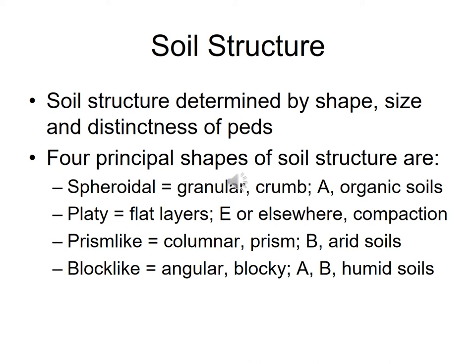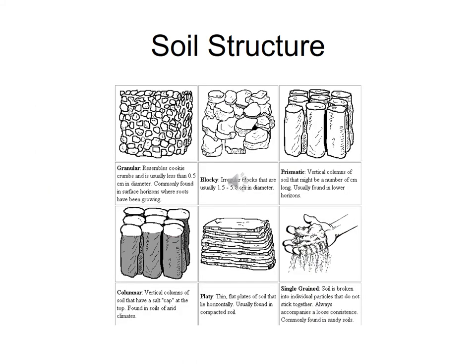There are four principal ped shapes. Spheroidal or granular peds are roundish crumbs — found in organic soils, loamy soils, and the A horizon topsoil. Platy peds are flat layers seen in the E horizon and can be signs of compaction. Prismatic or columnar peds are elongated and form in subsoil or arid soils. Block-like or angular peds occur in both A and B horizons and in humid soils.